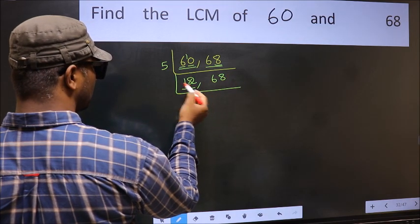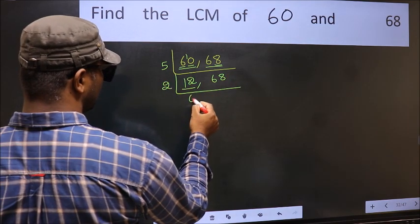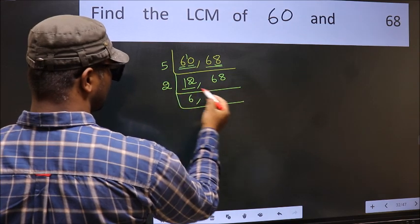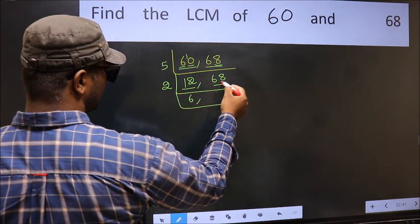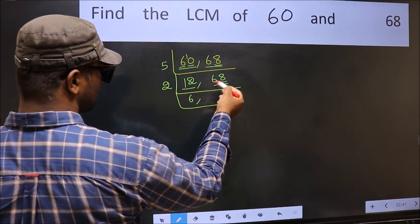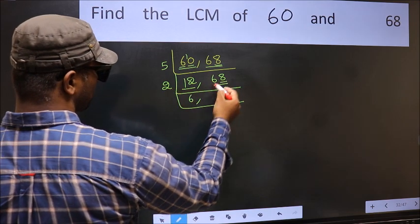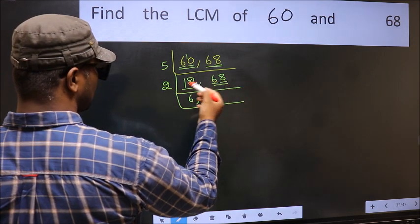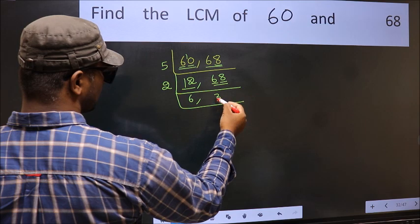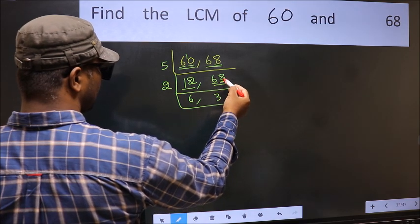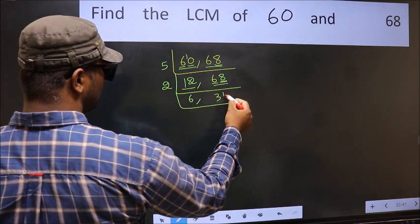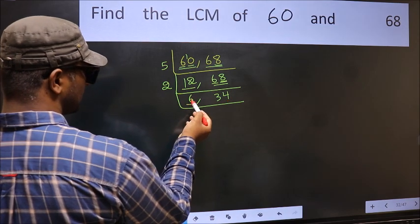Now here we have 12. 12 is 2, 6, 12. The other number is 68. Last digit 8, even, so this is divisible by 2. First number 6. When do we get 6 in the 2 table? 2 times 3 is 6. The other number 8. When do we get 8 in the 2 table? 2 times 4 is 8. Now here we have 6. 6 is 2, 3 is 6.